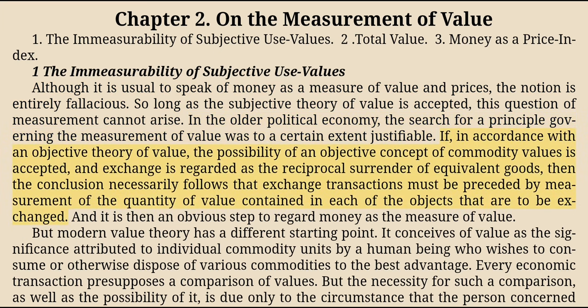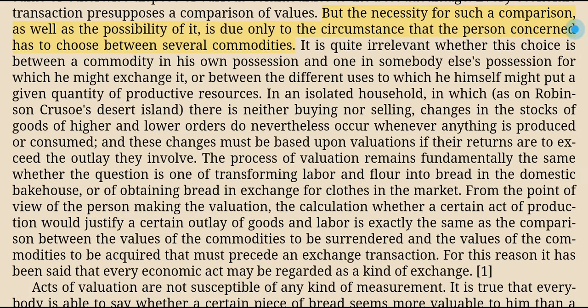If, in accordance with an objective theory of value, the possibility of an objective concept of commodity values is accepted, and exchange is regarded as the reciprocal surrender of equivalent goods, then the conclusion necessarily follows that exchange transactions must be preceded by measurement of the quantity of value contained in each of the objects that are to be exchanged, and it is then an obvious step to regard money as the measure of value. But modern value theory has a different starting point. It conceives of value as the significance attributed to individual commodity units by a human being who wishes to consume or otherwise dispose of various commodities to the best advantage. Every economic transaction presupposes a comparison of values, due only to the circumstance that the person concerned has to choose between several commodities.